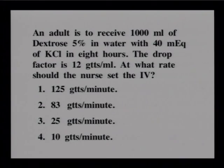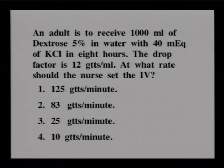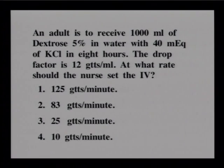The first problem: an adult is to receive 1000 milliliters of dextrose 5% in water with 40 milliequivalents of KCL in 8 hours. The drop factor is 12 drops per milliliter. At what rate should the nurse set the IV? Take a few moments and solve the problem.